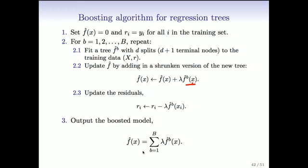At the end of the day, your boosted model has this form: it's a sum of shrunken trees, all B of them, grown to the data. These trees are not independent of each other like they were in random forests, because each tree was grown to the residuals left over from the previous collection of trees.